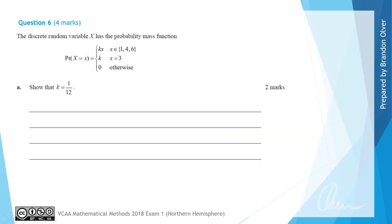For question 6, we're told that the discrete random variable X has a probability mass function described as shown. For part A, we're asked to show that k equals 1 over 12. So before we go too far into this question, we need to recall that it is a discrete random variable.